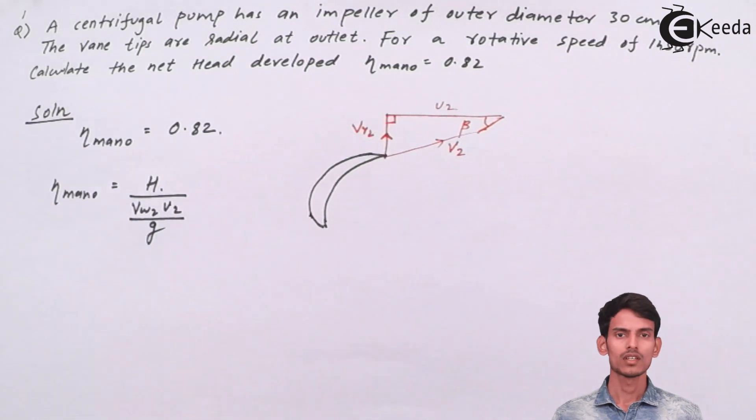So we all know, we have already seen in the efficiencies part, that manometric efficiency is nothing but H upon VW2U2 upon G. Here in this question, VW2 and U2. We know what U2 is, but we don't know what is VW2.